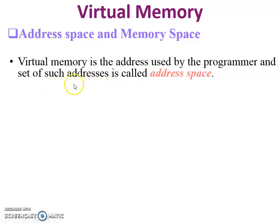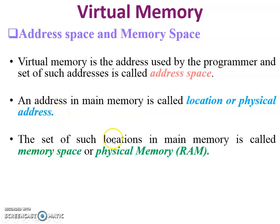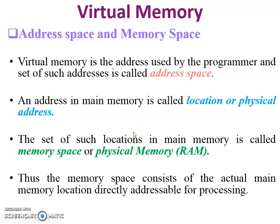Virtual memory is the address space used by the programmer; the set of such addresses is called address space, and it is physically not available. An address in main memory is called a location or physical address. The set of such locations available in physical memory — in RAM — is called memory space. Thus memory space consists of the actual main memory locations directly addressable for processing.